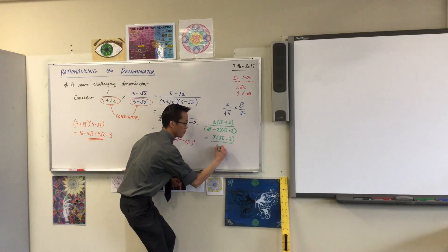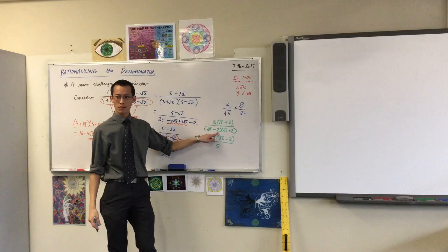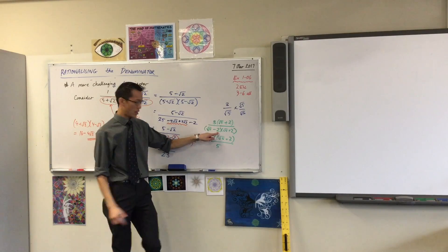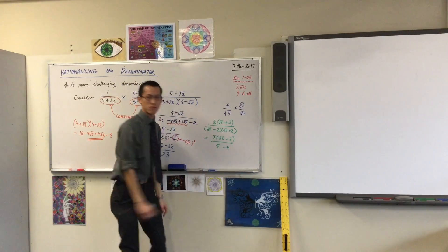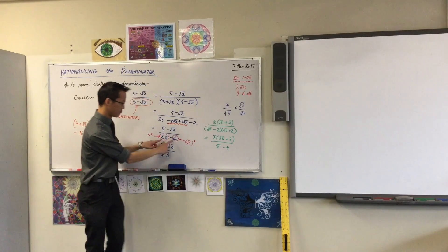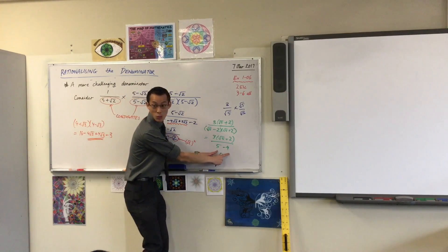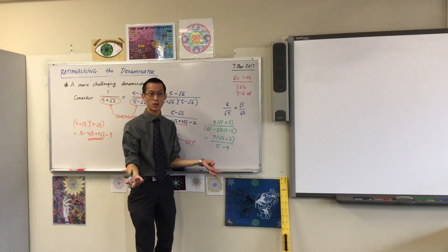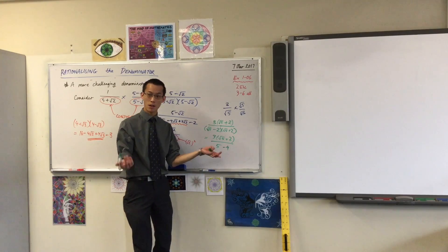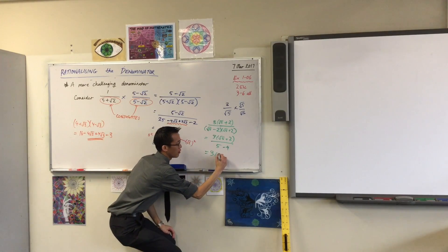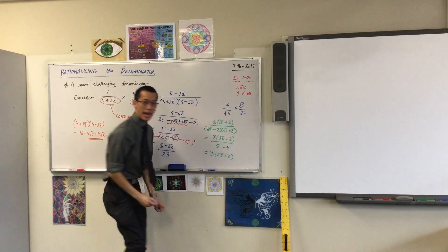Squares? In this case, coincidentally, 5 minus 4 is just 1. So therefore, 3 over 1.